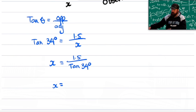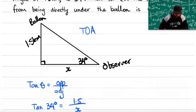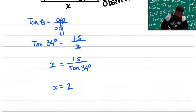So x, pulling out our calculator, we're going to do 1.5 over tan of 34 degrees. And what we're going to get is 2, and it asks to the nearest meter. So that's 2.224 kilometers away.